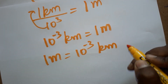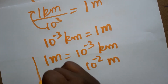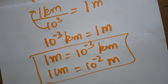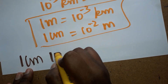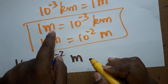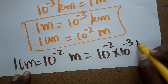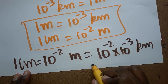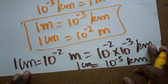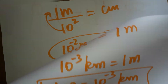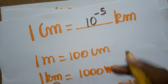We already found that one centimeter is equal to 10 power minus 2 meters. Now substituting: one centimeter equals 10 power minus 2 multiplied by 10 power minus 3 kilometer, which gives us 10 power minus 5 kilometer. So one centimeter is equal to 10 power minus 5 kilometer. Thank you for watching my channel.